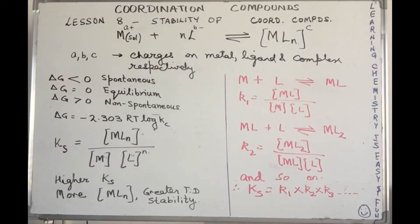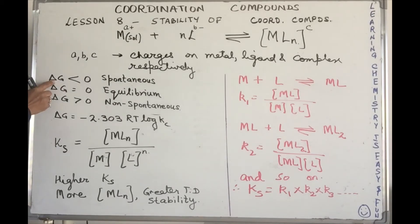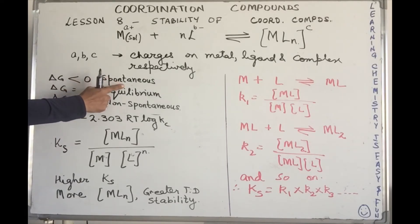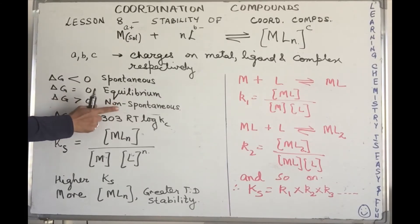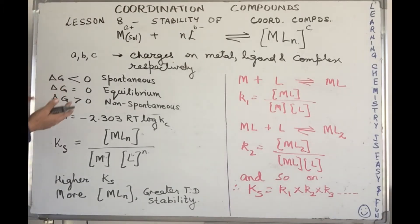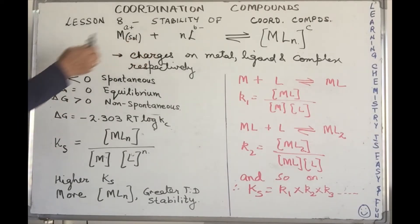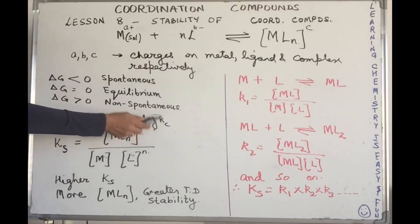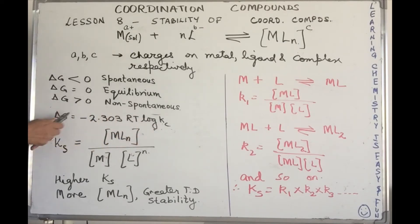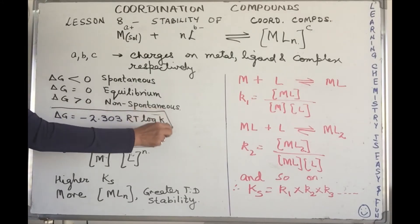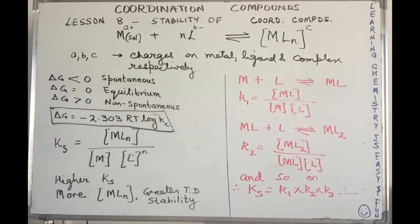Thermodynamic stability brings to mind the free energy (Gibbs energy, ΔG) which defines the spontaneity of a process. When ΔG is less than zero, the process is spontaneous; equal to zero, it is at equilibrium; greater than zero, the process is non-spontaneous. Since we are talking about an equilibrium reaction, we use the equilibrium constant, and the relation is: ΔG = −2.303RT log Kc. Please refer to the thermodynamics topic on the channel if you are unfamiliar with this expression.